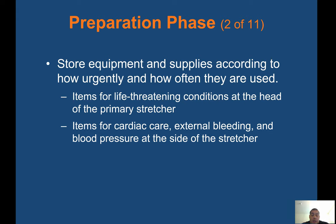Store equipment and supplies according to how urgently and often they are used. In the back of the ambulance you have different compartments — airway items like oxygen masks, nasal cannulas, and CPAP are towards the middle near the oxygen tree, while trauma supplies are further towards the back for easier reach. This is why you always go through each ambulance at the beginning of your shift so you know where everything is.